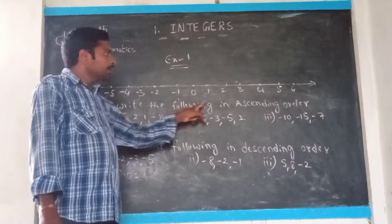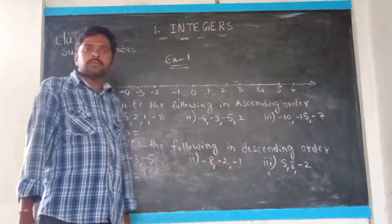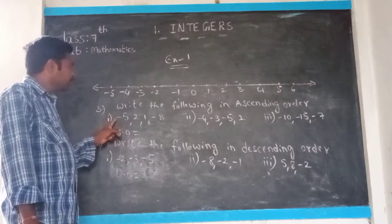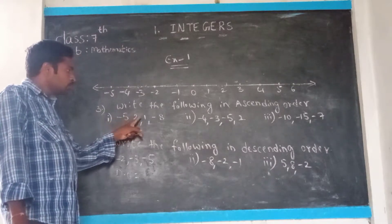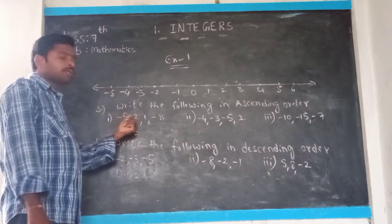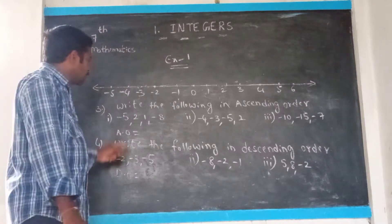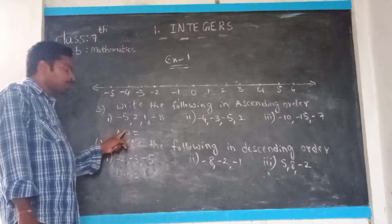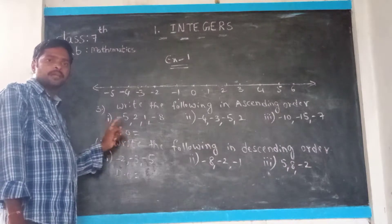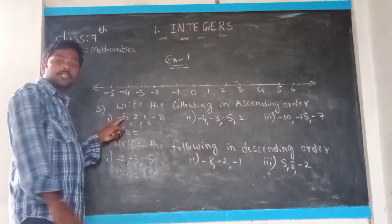Write the following in ascending order. What is the ascending order? Already we know that ascending order means small number to big number. So you take the first sum — what numbers are given? Minus 5, 2, 1, and minus 8. You are given 4 numbers. Some numbers have plus and some numbers have minus — that is positive numbers and negative numbers are given.